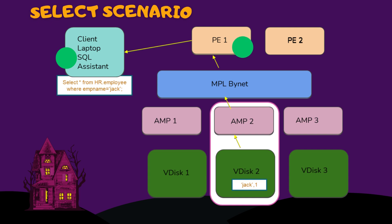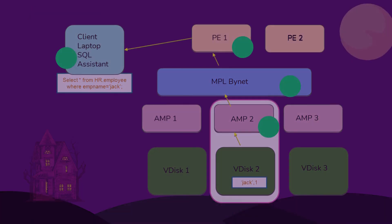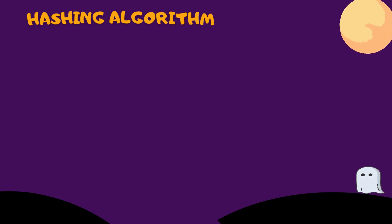Once this query is executed on the client side, it is first passed through the Parsing Engine where the same set of steps are performed: syntax check, understanding the query, and the Jack value passed through the WHERE clause — this is where hashing takes place. After that, the Optimizer prepares a plan and the Dispatcher passes it to the Message Passing Layer. The MPL communicates between the Parsing Engine and AMPs. Finally, Jack's record location is identified on the storage layer of the AMP and returned back to the client through the same path.